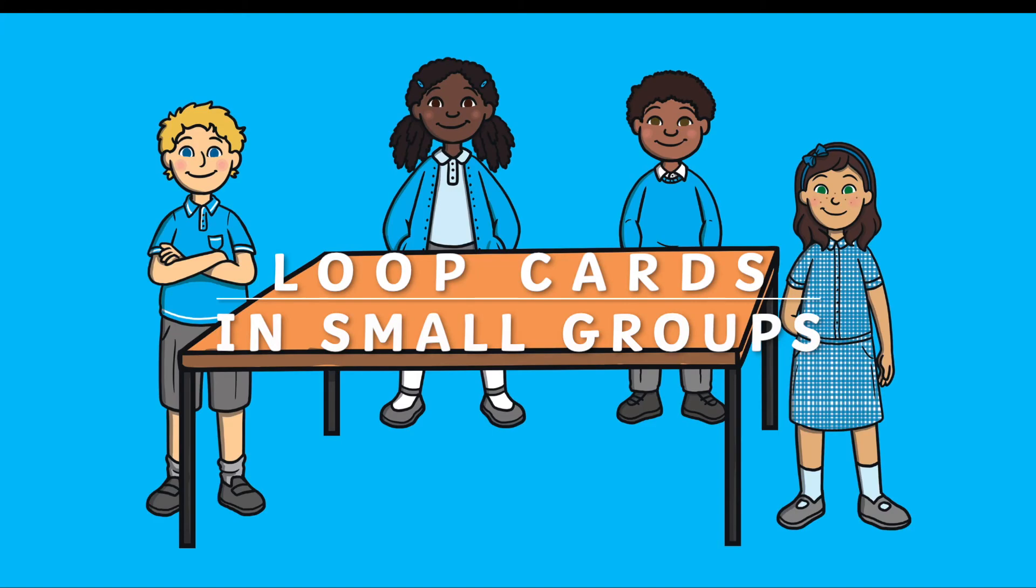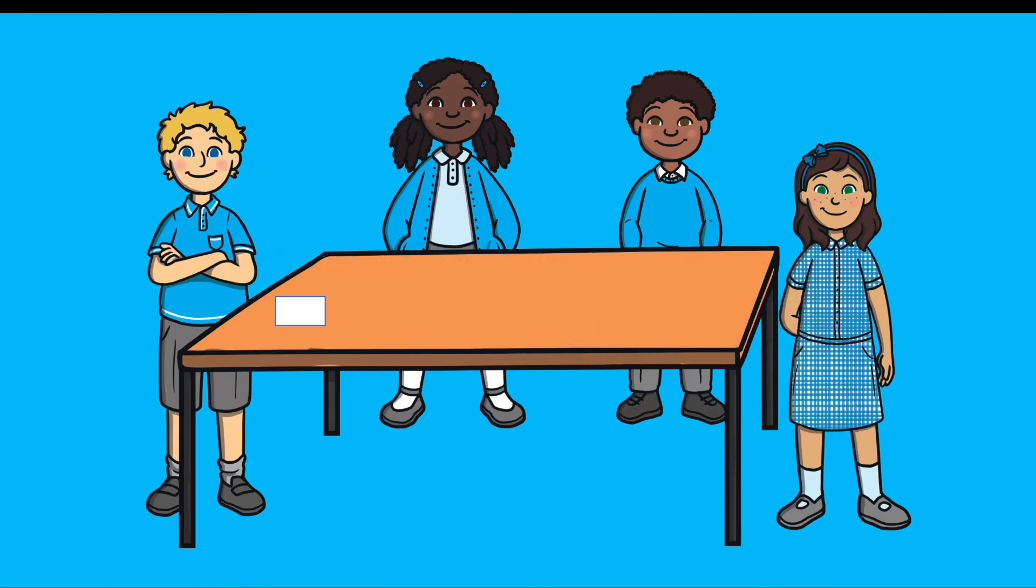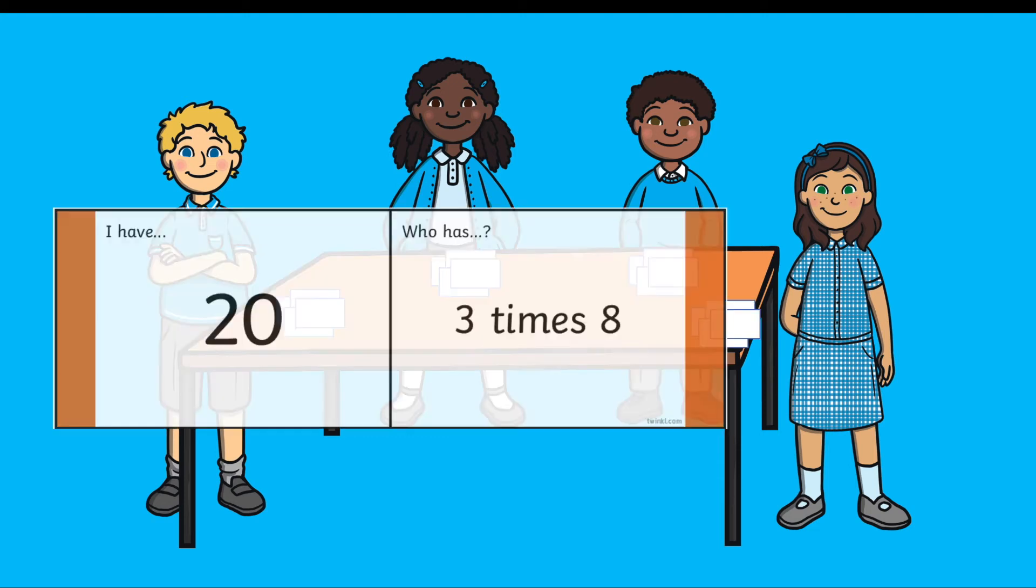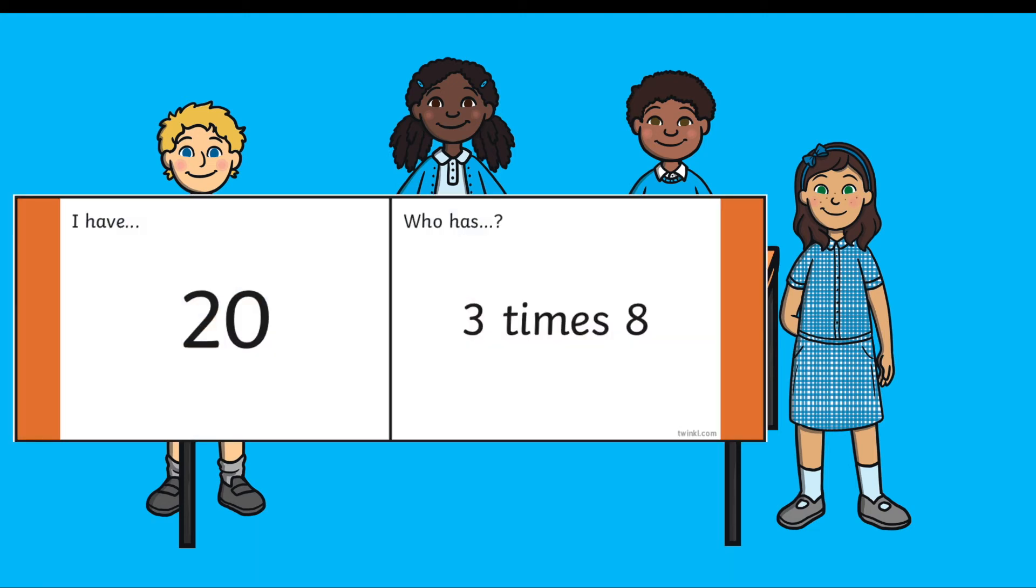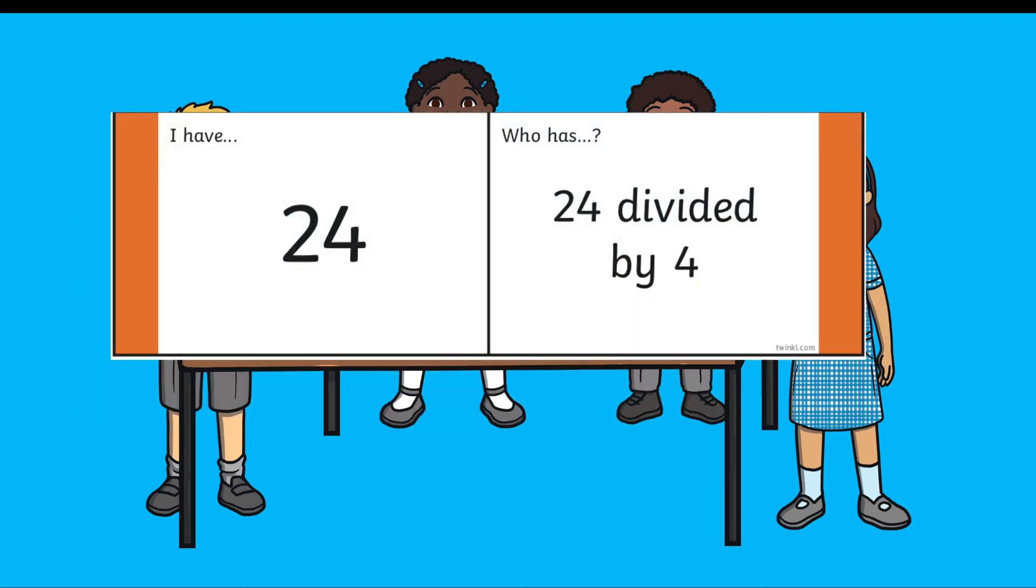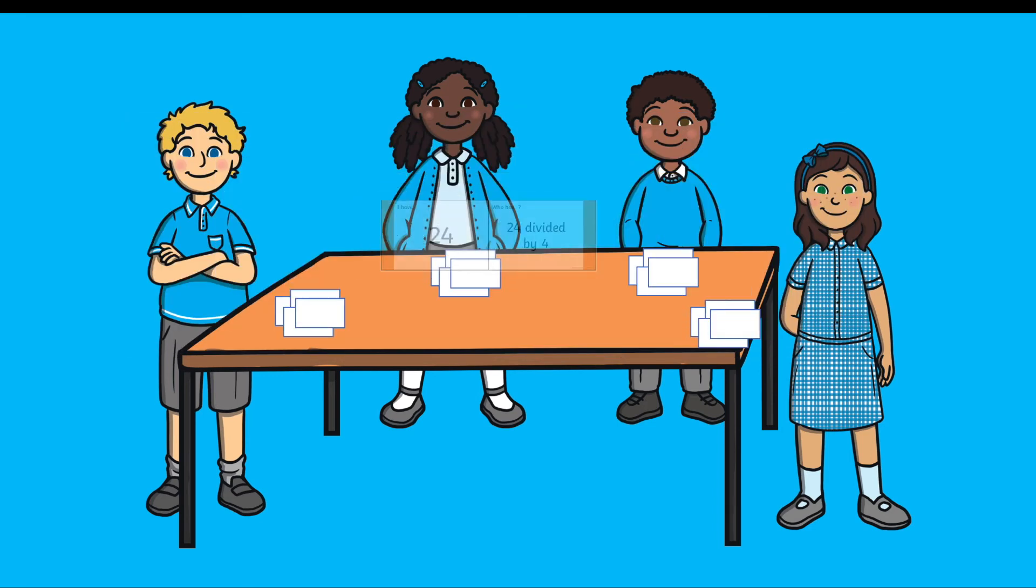Loop cards can be used in small groups. These could be ability groups and children would have a few cards each. One child would start, again read their question and then the children would have to shuffle through their cards to find if they have the correct answer card and so on until the group has finished.